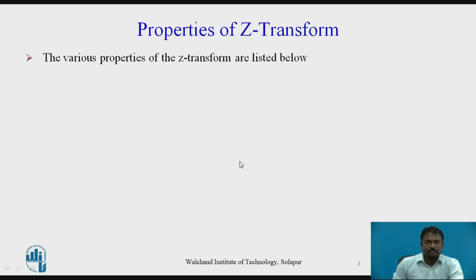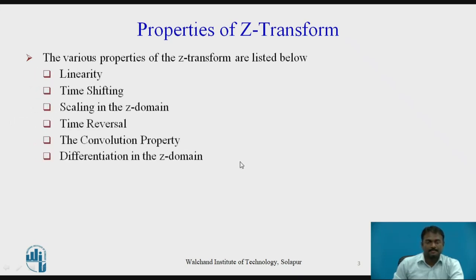The various properties of the Z-transform are as listed below: linearity, time shifting, scaling in the Z-domain, time reversal, the convolution property, and differentiation in the Z-domain.